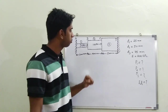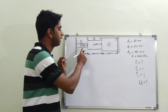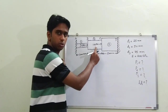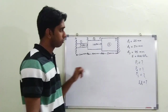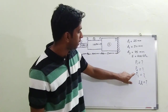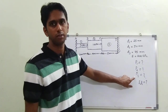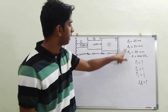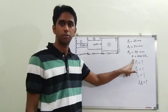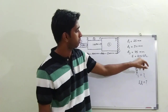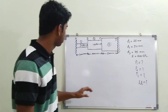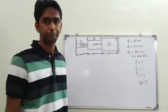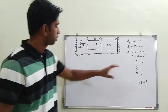We have to find out the load shared by each section — that is, the load acting in section 1, section 2, and section 3. So we need to determine P1, P2, and P3. The diameters of each section are given, the material is steel with Young's modulus E = 200 GPa, and the lengths are 300 mm, 400 mm, and 500 mm respectively.